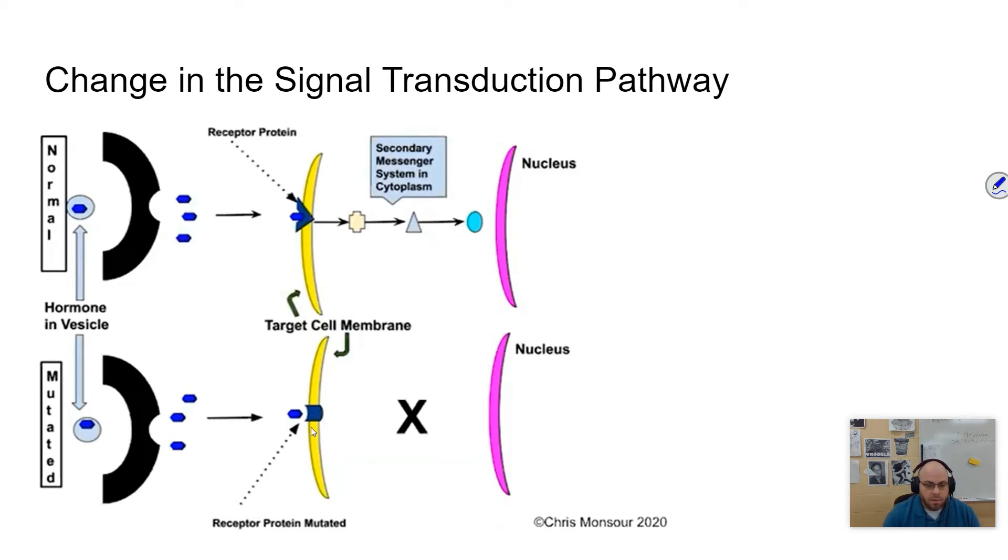Well, here, this receptor has changed because it's mutated. There's a mutation on the DNA. Therefore, the shape has changed. Therefore, it's no longer able to receive the protein. None of this is going to happen as a result of that. And that cellular response is not going to be initiated. Therefore, some sort of cellular function or bodily function is not working correctly.